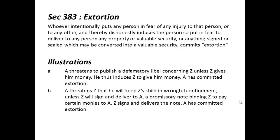Now let's discuss section 383 in detail. There are four illustrations we will see. First, when one person puts another person in fear of injury — for example, person A threatens person B or a relative or son of B — saying if you don't do this work something bad will happen. That threat to another person is also included under this section.